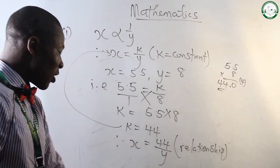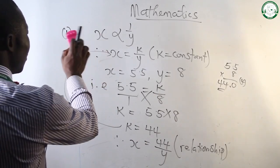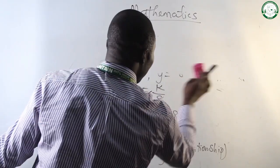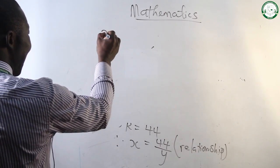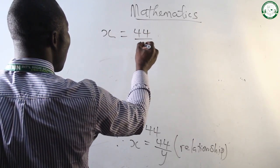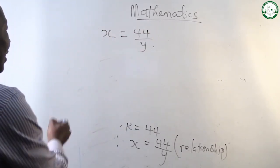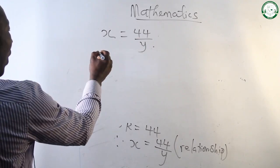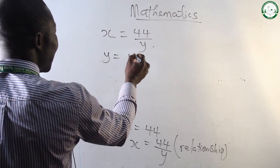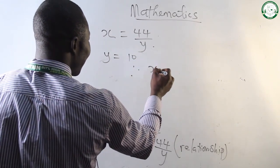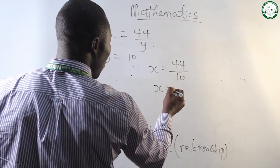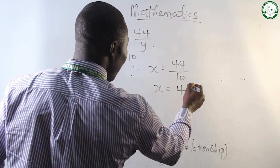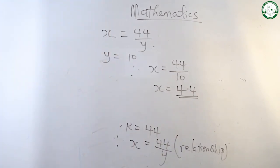This is our real equation now. For the first question, we have x equals to 44 over y. When y equals 10, therefore x equals 44 divided by 10, which gives us 4.4. That is, when y equals 10, x equals 4.4.